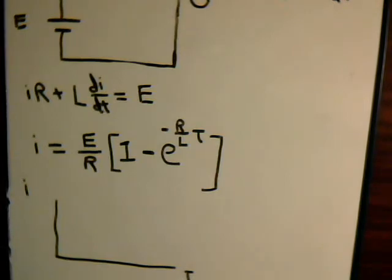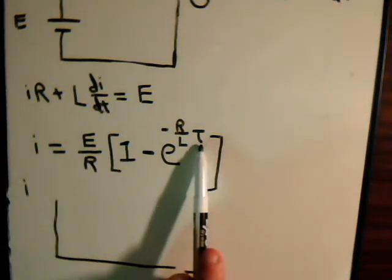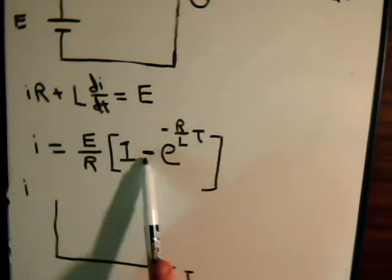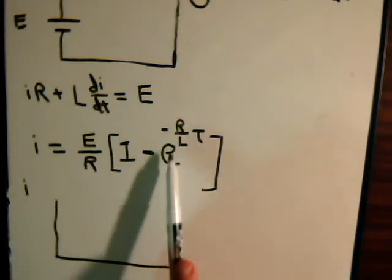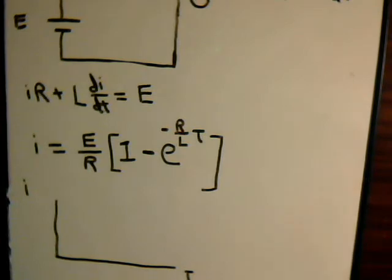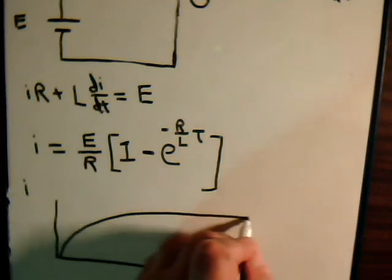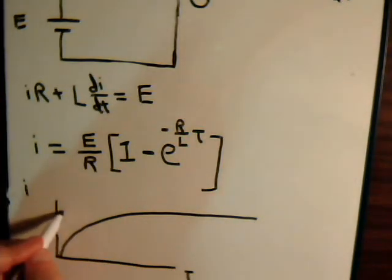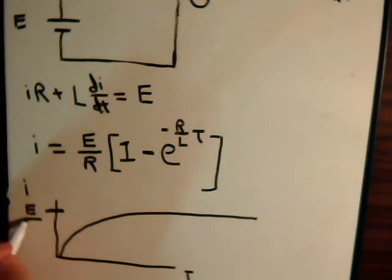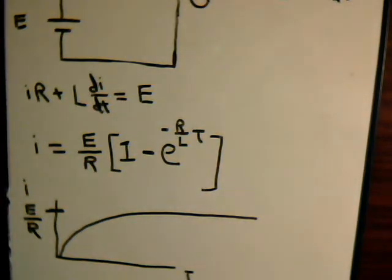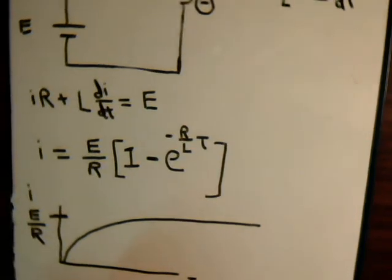But then as we go through time, the number that we are subtracting from one becomes smaller and smaller and smaller. So the current goes something like this then until it reaches this, I guess you would call it a steady state value of E over R. And of course, that's what we would expect.